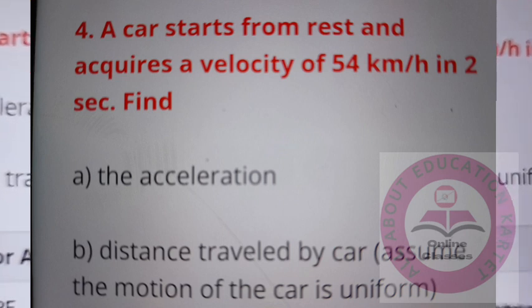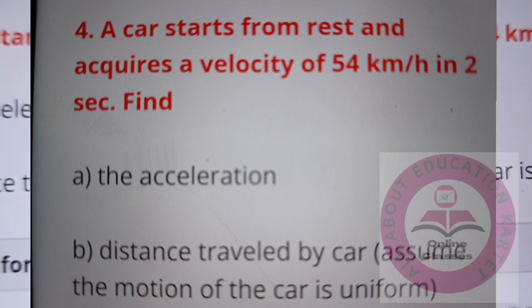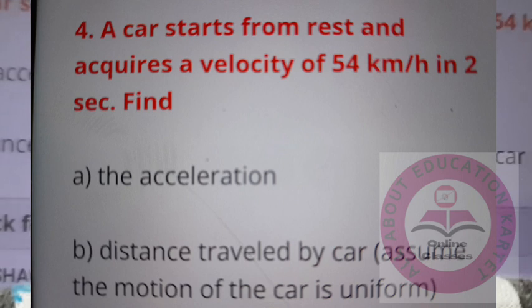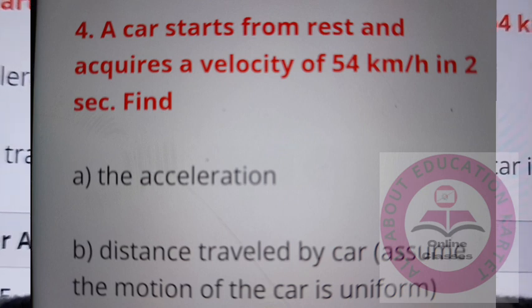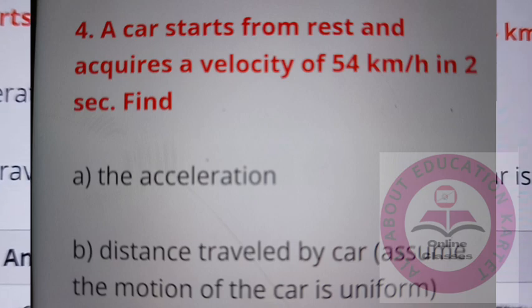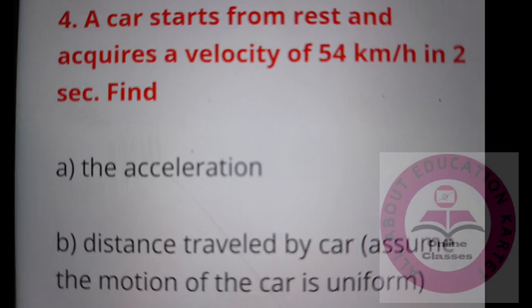Next question: a car starts from rest and acquires a velocity of 54 km per hour in 2 seconds. Find the acceleration and the distance traveled by the car. Assume the motion of the car is uniform. A car starts from rest means initial velocity U equals 0 meters per second.